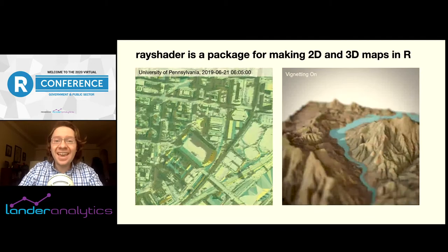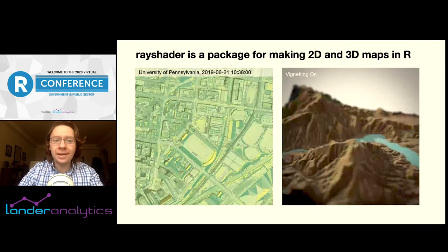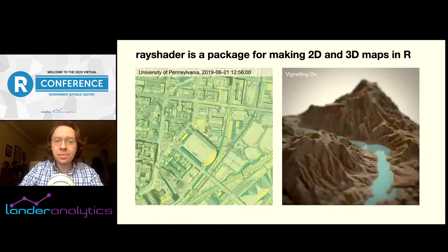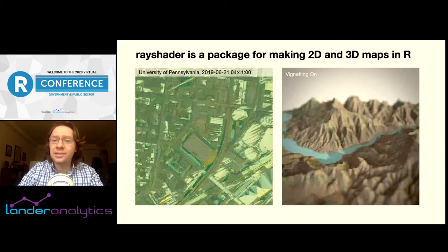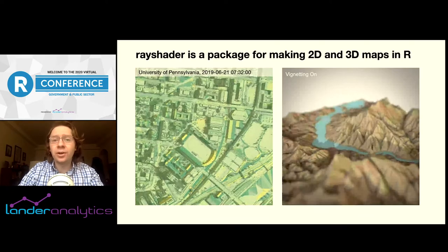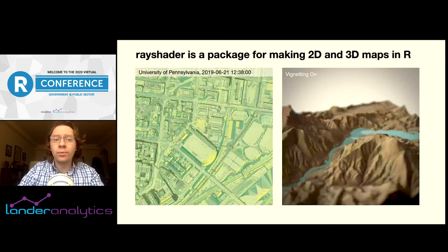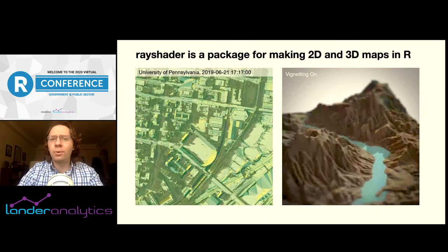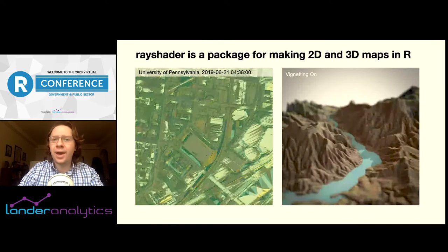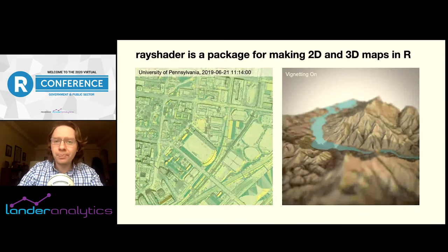RayShader can take these 2D maps and project them into 3D as we see on the right. RayShader also includes functions to apply post-processing effects to enhance these 3D maps. Here I've added a depth-of-field effect, which blurs areas far away from the focal point, and a camera vignetting effect to add a subtle darkening by the edges like you'd get in a high-end camera.